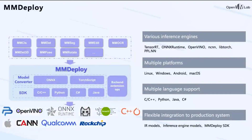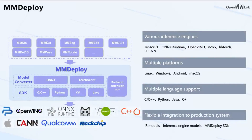We present the architecture of MMDeploy. MMDeploy naturally supports OpenMMLab projects like MMPretrain, MMDetection, MMSegmentation, etc. Its main components are: the model converter, SDK, and backend extension operators. The model converter converts PyTorch models to IR models and then IR models to inference engines. SDK provides simple and unified APIs to execute the model. We implement lots of operators on different backends and devices. MMDeploy supports various inference engines such as TensorRT, ONNX Runtime, LibTorch, etc., and is compatible with multiple platforms including Linux, Windows, Android, and macOS.